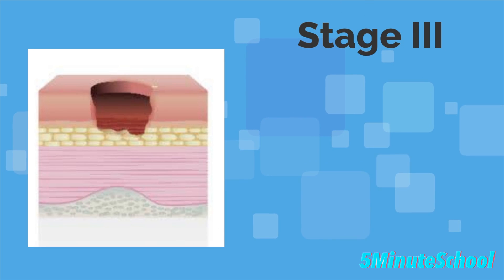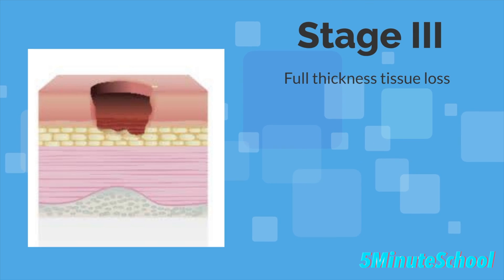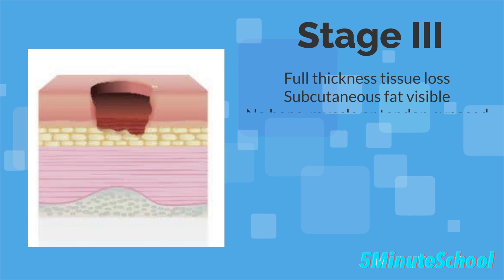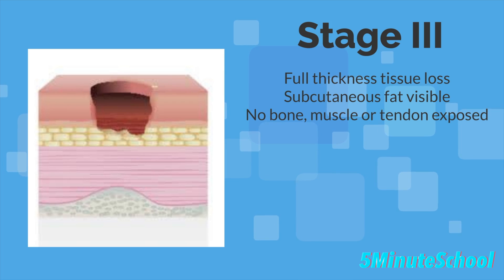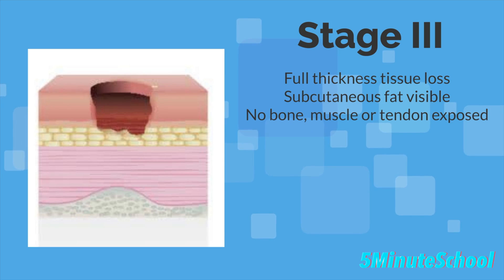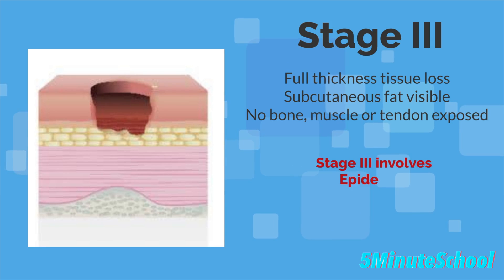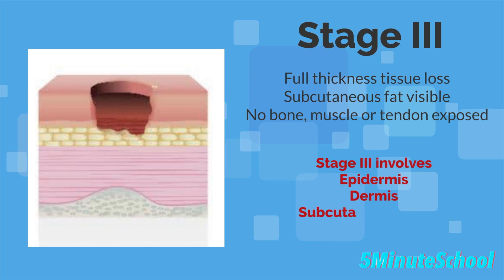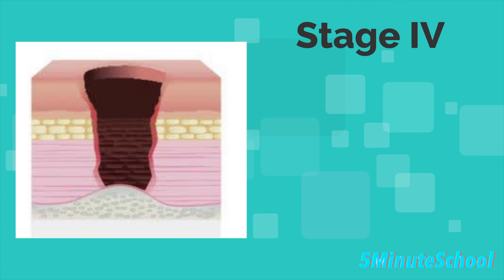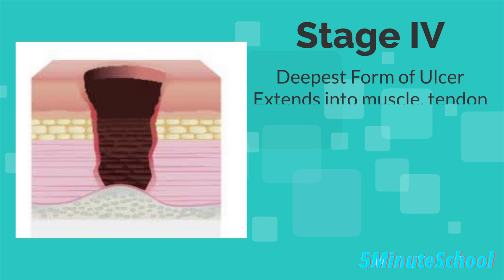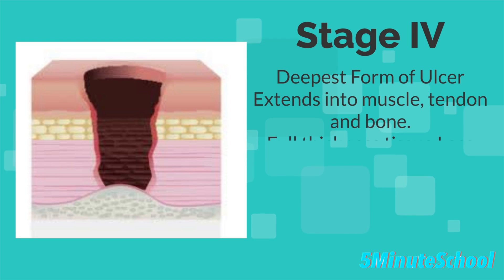Stage three is when we have full thickness tissue loss. You might be able to see some subcutaneous fat visible. At this stage there isn't any bone, muscle, or tendon involvement, but you do see subcutaneous fat. Stage three involves the epidermis, dermis, and subcutaneous tissues. Stage four is the deepest form of the ulcer — it extends into the muscle, tendon, and bone with full thickness tissue loss.